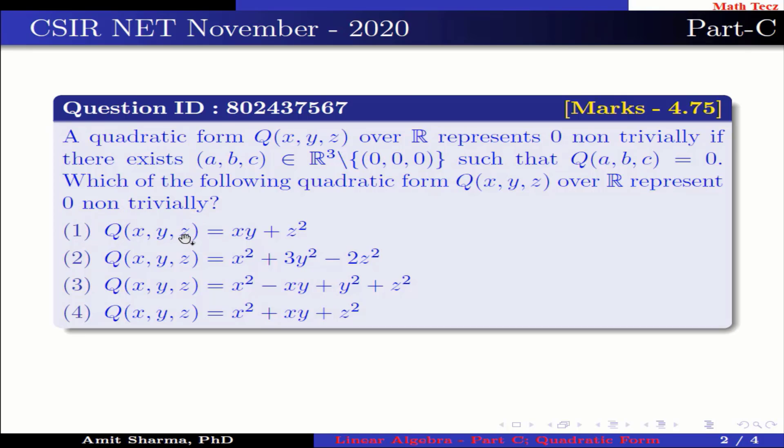Option 1: Q(x,y,z) = xy + z². Option 2: Q(x,y,z) = x² + 3y² - 2z². Option 3: Q(x,y,z) = x² - xy + y² + z². Option 4: Q(x,y,z) = x² + xy + z².